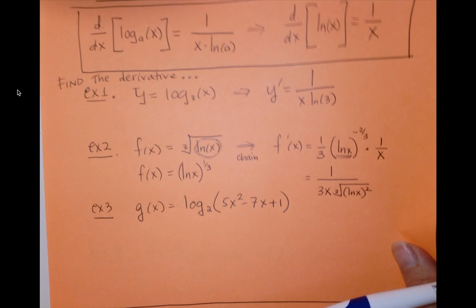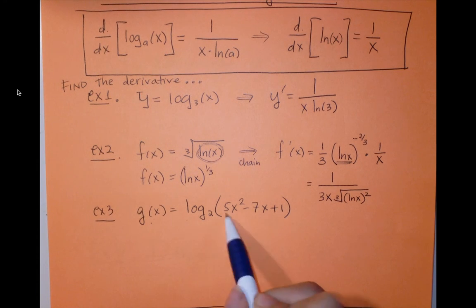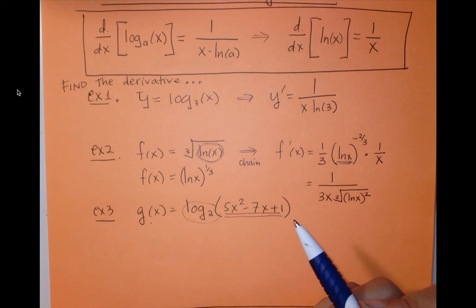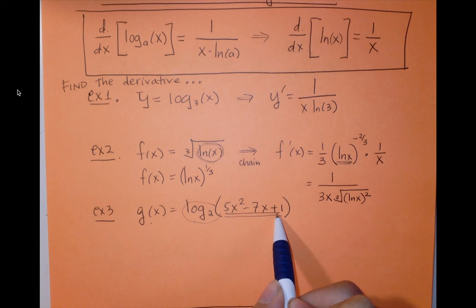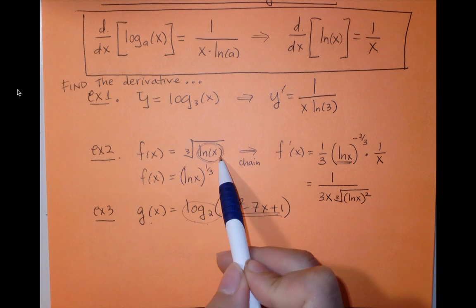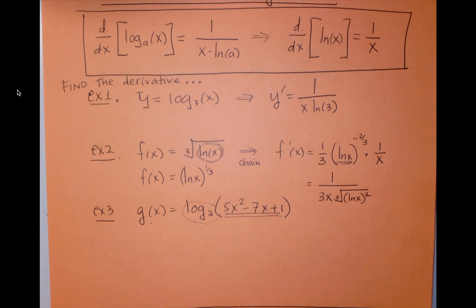Going down here, I have another composition. My outside function, though, is a log, and my inside function is a polynomial. So that was the opposite of what happened in example 2, where the inside function was a log, and the outside function was a power function. So this is the opposite case.